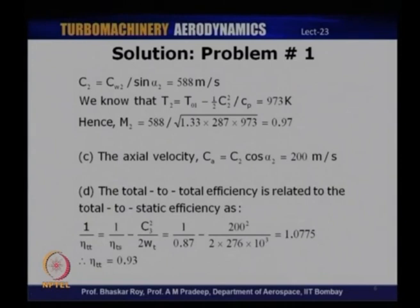The third part of the question is to find the axial velocity. Axial velocity Ca = C2 × cos(α2) = 588 × cos(70°) = 200 m/s.